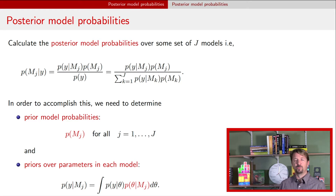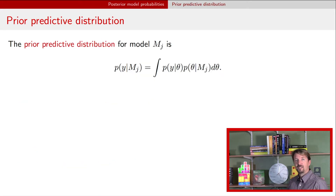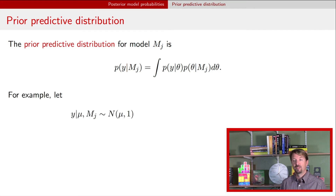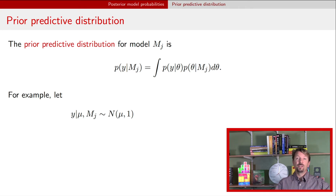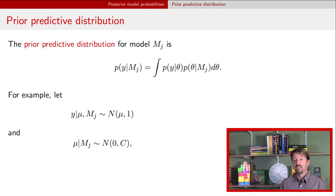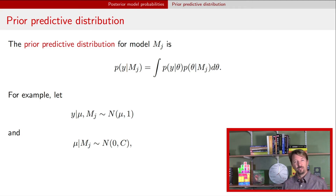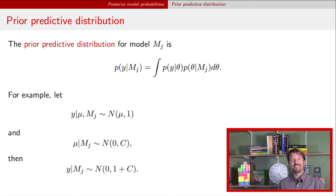The prior predictive distribution, denoted P(Y|MJ), is just the integral over the parameters in that model. As an example, suppose we have a model for our data that's normal with an unknown mean mu and a variance of one. We choose a normal prior over mu with variance c. If we integrate out mu — since combinations of normals are normal — the distribution for Y after integrating out that parameter is normal with a mean of zero and a variance of 1 plus c.